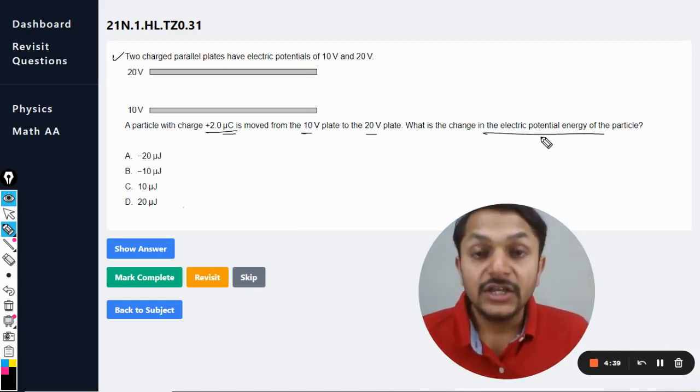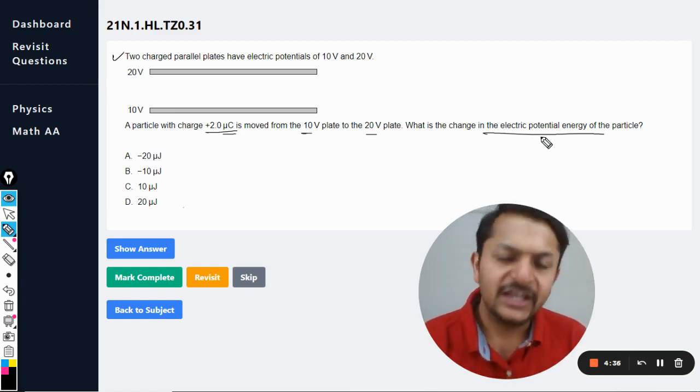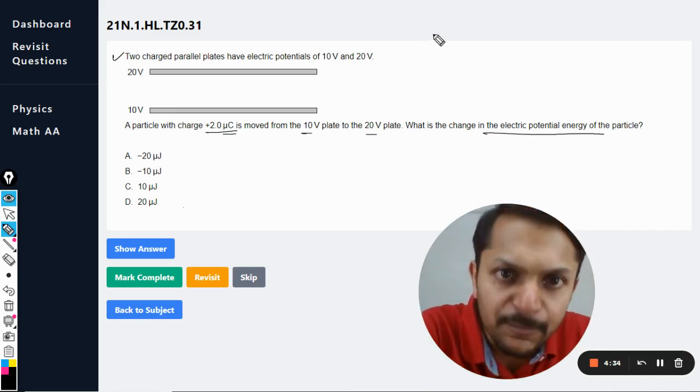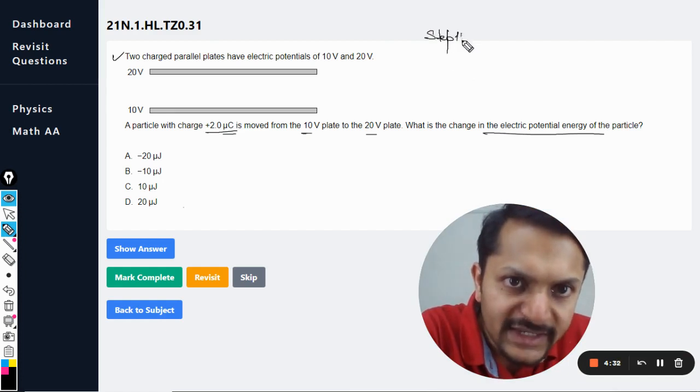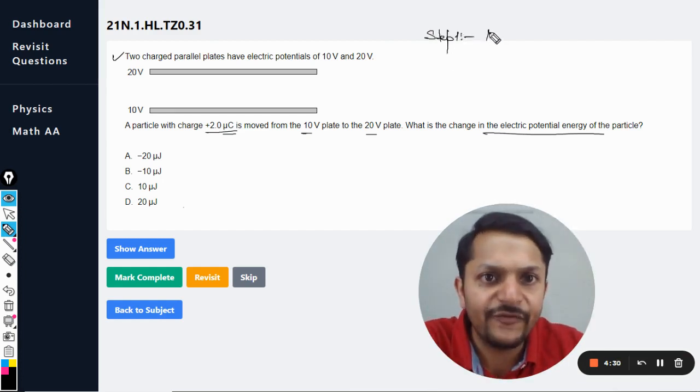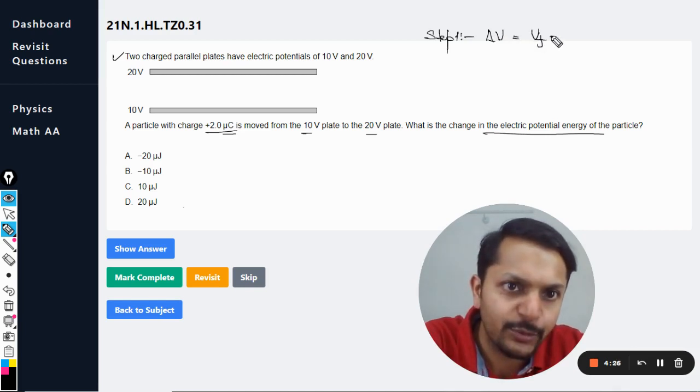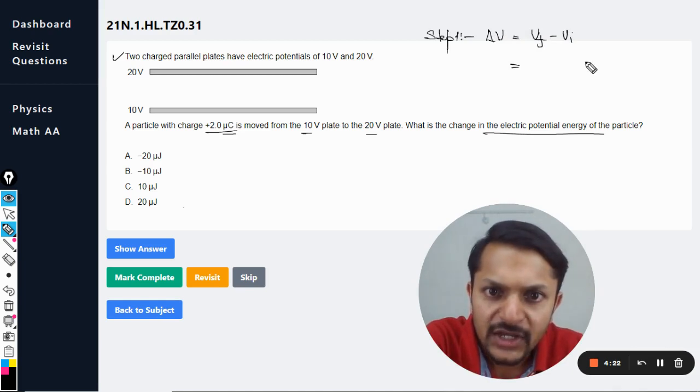So I have already told you how we are going to do this question. Let us go with that. So what is our step number one? We will find the total change in the potential. So it is the final potential minus initial. So the final potential is 20 volt